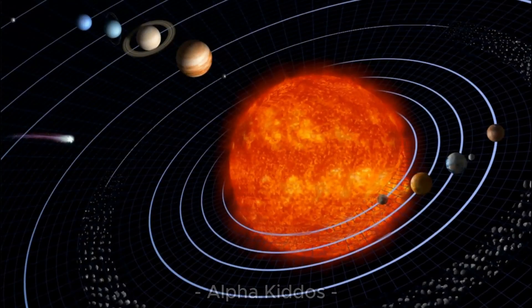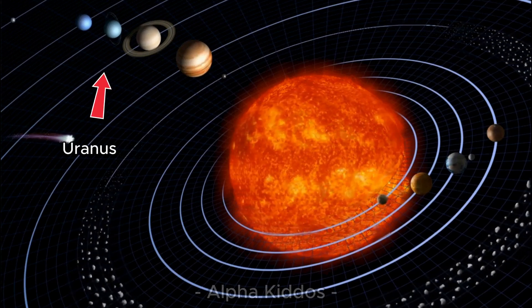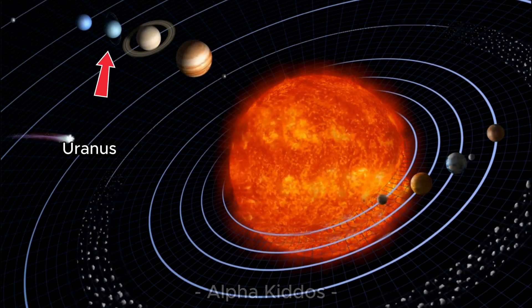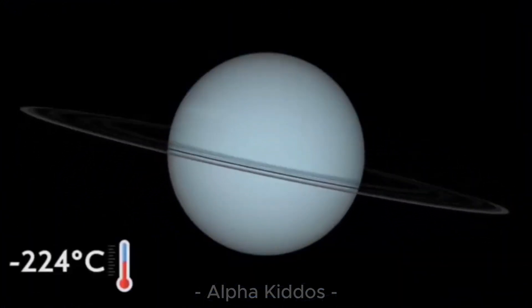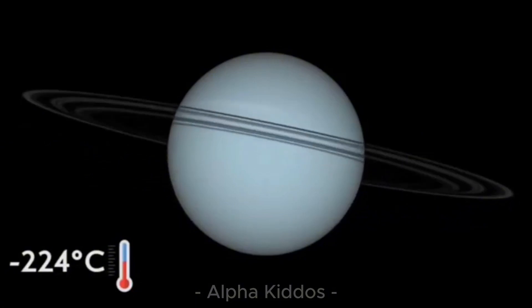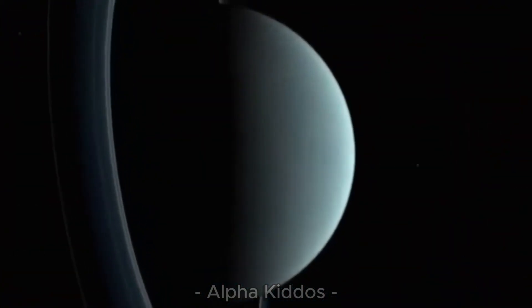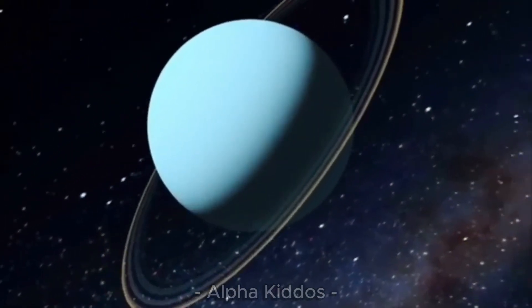Uranus. Next we get to know the planet Uranus. Uranus is the seventh planet from the Sun. Its blue-green color comes from methane gas in the atmosphere, and is extremely cold, reaching minus 224 degrees Celsius. Uranus has 13 dark thin rings and 27 moons, many named after Shakespeare's characters like Titania, Oberon, Ariel, and Miranda. Learning about Uranus is so much fun, right?